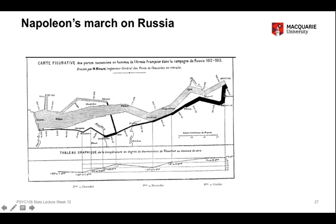The dark segment here is his return from Moscow back to France — quite small when he gets back. When he gets right back to France, the width of this dark black line compared to the width of the outgoing line is minuscule. So clearly the campaign was a disaster from the human perspective.